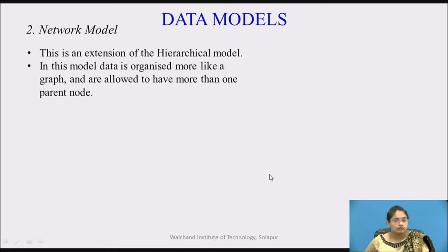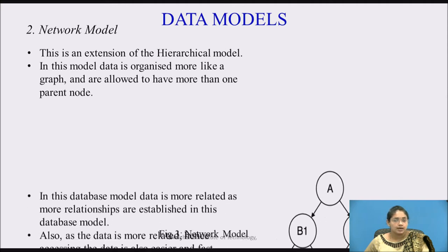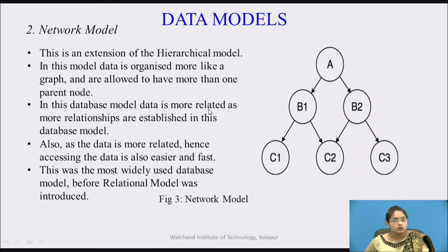Next is the network model. This is an extension of the hierarchical model. In this model, data is organized more like a graph and nodes are allowed to have more than one parent node. Data is more related as more relations are established, and accessing data is easier and faster. This was the most widely used database model before the relational model was introduced. The key difference from the hierarchical model is that one child node can have more than one parent at a time.